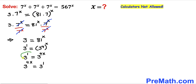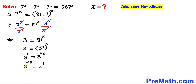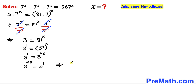Now we can write this equation the other way around — it doesn't make any difference. We can observe that our bases are the same on both sides, so therefore we are going to equate the exponents as well. So therefore we can write 4x equals 1.